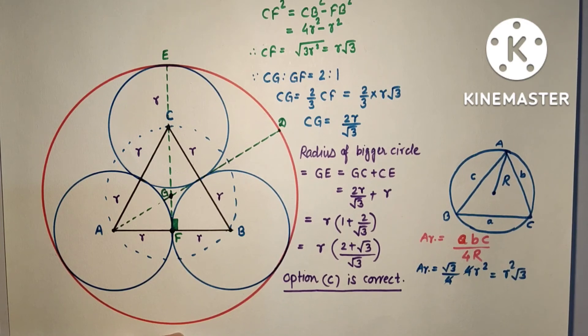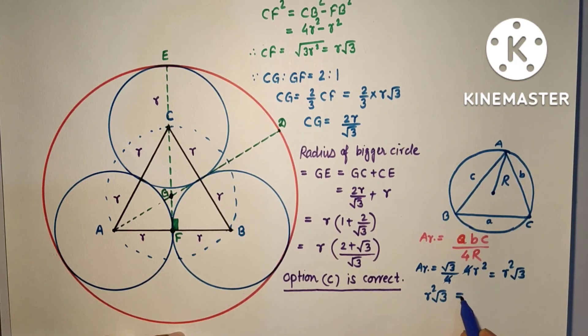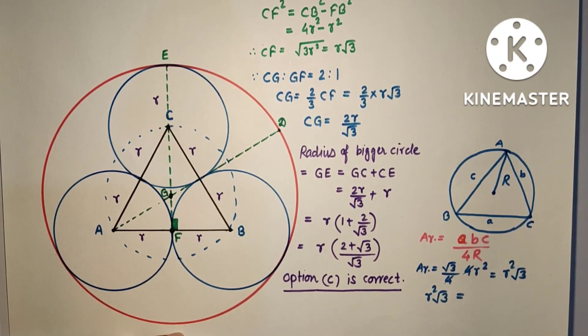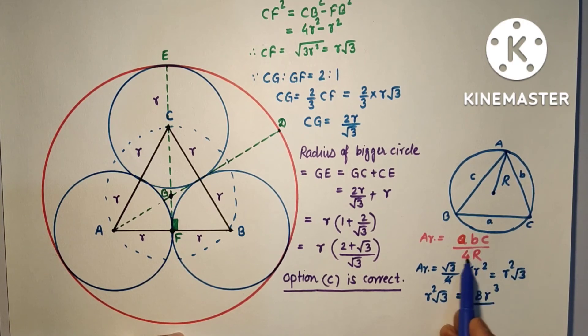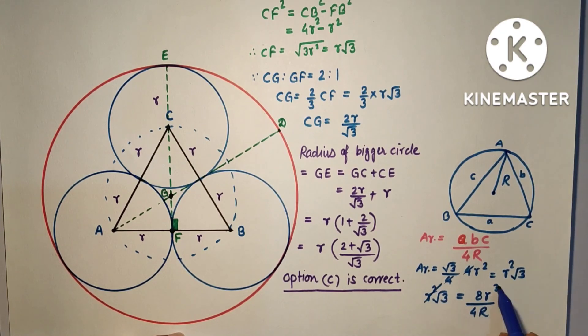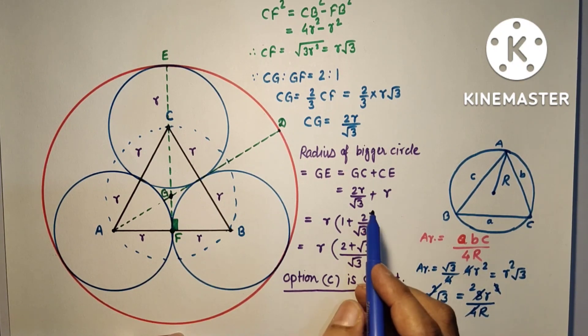This area is equal to ABC, product of the sides: 2R × 2R × 2R, so 8R³ upon 4R²√3. R³ and R² will get cut, so 4 and this will get cut. So R is equal to 2R/√3. So we found R equals 2R/√3, which we found already here.